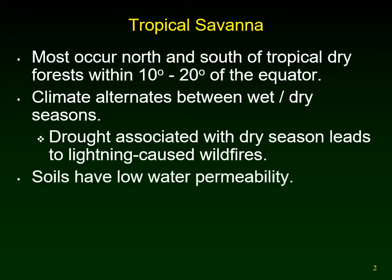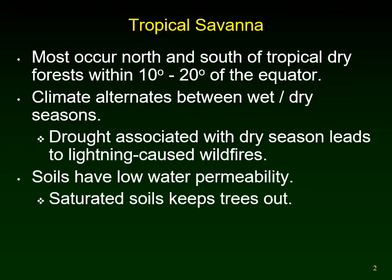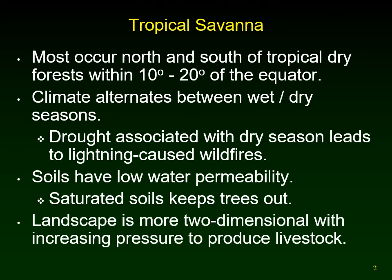The soils have low water permeability, which means they hold water on the surface. They have a high amount of clay, and that causes water to stay at the surface, which actually kills the roots of trees — so there won't be very many trees. The landscape is more two-dimensional. There is also increasing pressure to produce livestock, so there's a strong human influence.